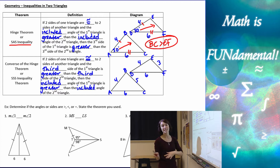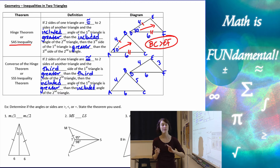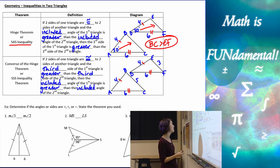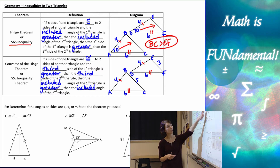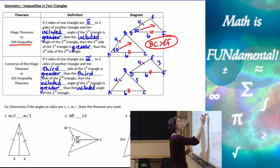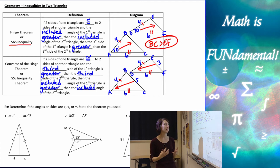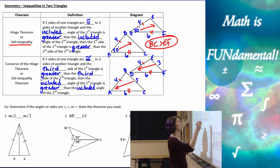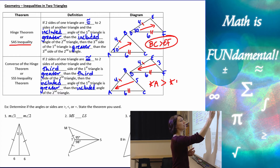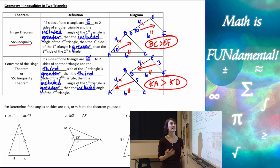Now let's look at the converse of the hinge theorem, or the side-side-side inequality theorem. This states that if two sides of one triangle are congruent to two sides of another, and we're also given the third sides — for example BC is 5 and EF is 3 — then we can state that the included angles across from those third sides are going to have the same size relationship.